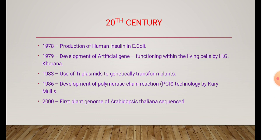In 1979, development of the artificial gene, discovered by Hagi Khorana. In 1983, use of Ti plasmids to genetically transform plants. Genetically modified Ti plasmids are very important as tumor-inducing plasmids caused by Agrobacterium tumefaciens. These Ti plasmids are very important for genetically modified plants, or transgenic plants.